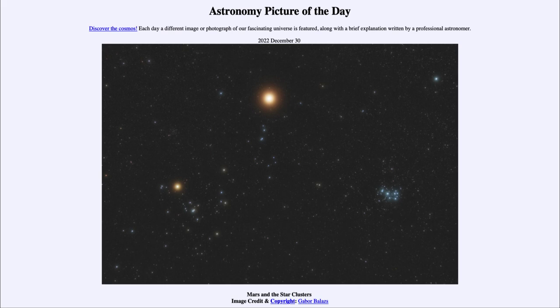Here we see Mars in the constellation of Taurus, along with two prominent star clusters. On the left-hand side, we see another reddish object—the star Aldebaran, which is part of the head of the bull.